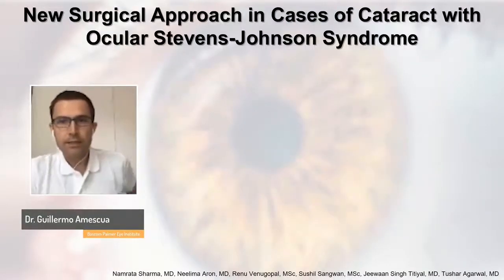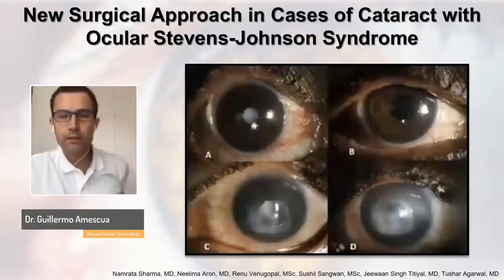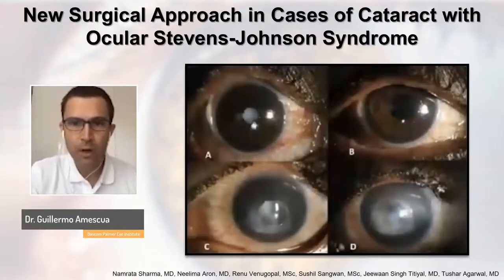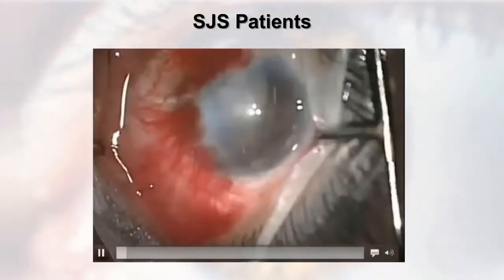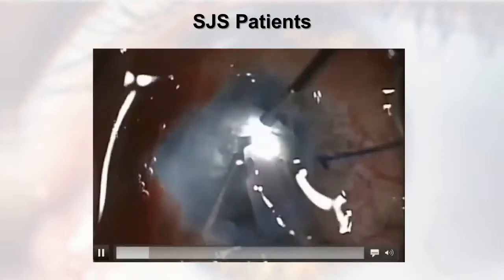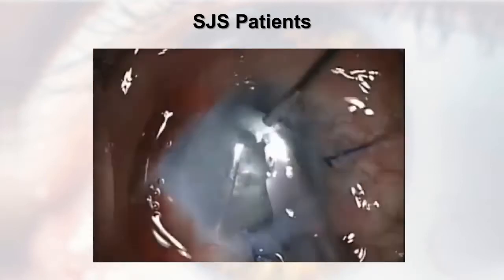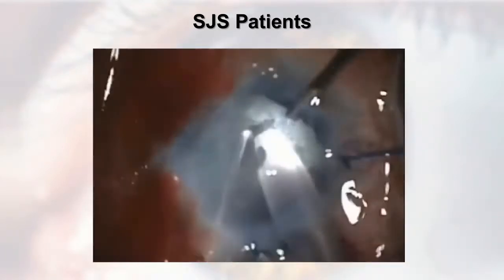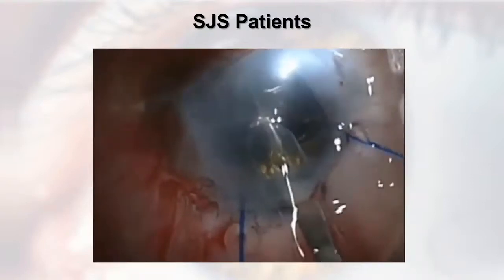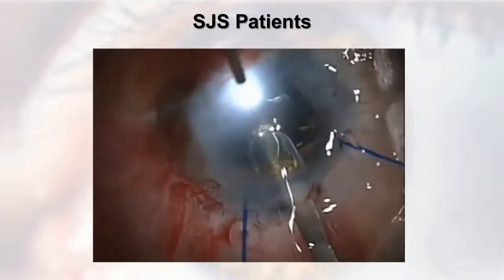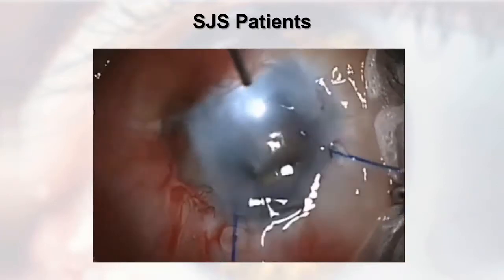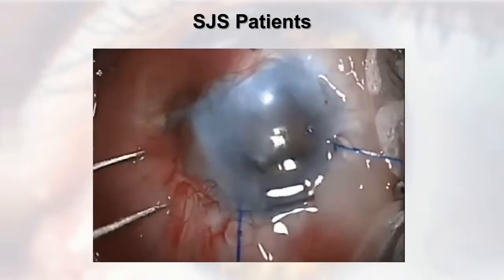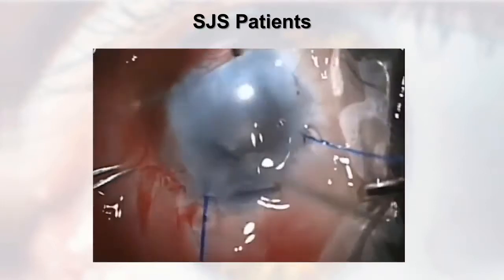The next case is a Stevens-Johnson syndrome patient. I'll let Dr. Namrata Sharma comment since she published this paper — she shared this video with me. The pearls here: do a small clear corneal incision, try to avoid scleral or extracapsular incisions, use the endoscope, avoid epithelial defects during surgery, and ensure very good anesthesia. These are the pearls she described in her series where the results were very good.